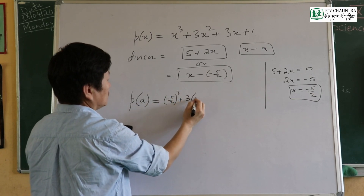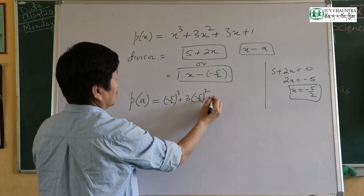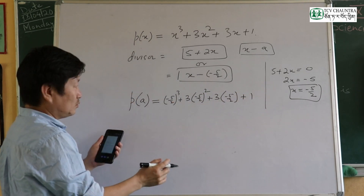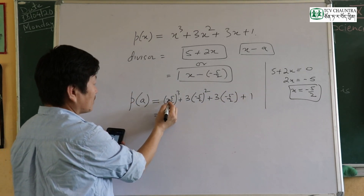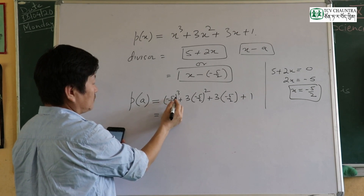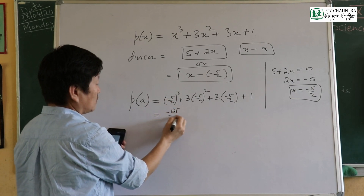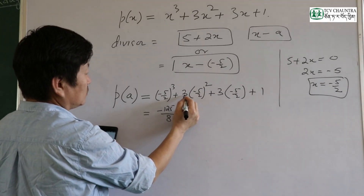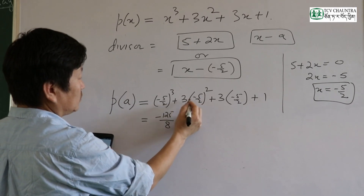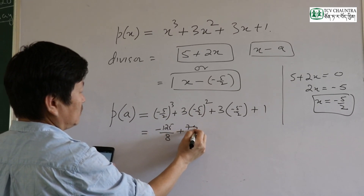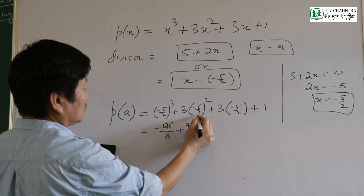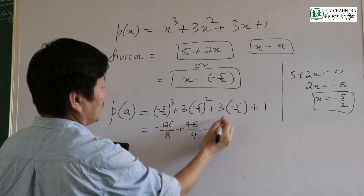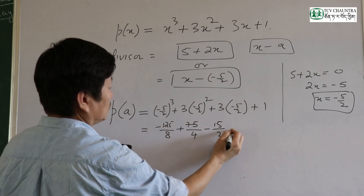Now substitute: p(−5/2) equals negative 5/2 cubed plus 3 times negative 5/2 squared plus 3 times negative 5/2 plus 1. That is: negative 125 over 8 plus 3 times 25 over 4, plus negative 15 over 2, plus 1.